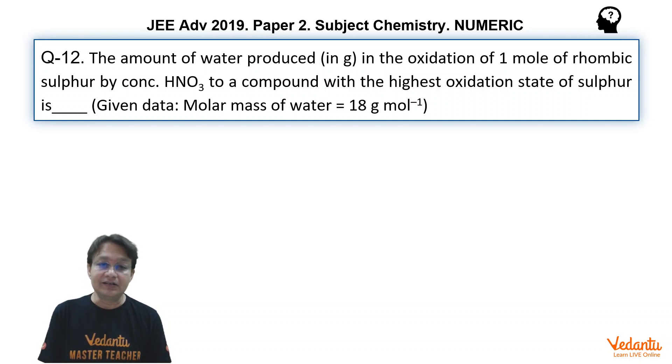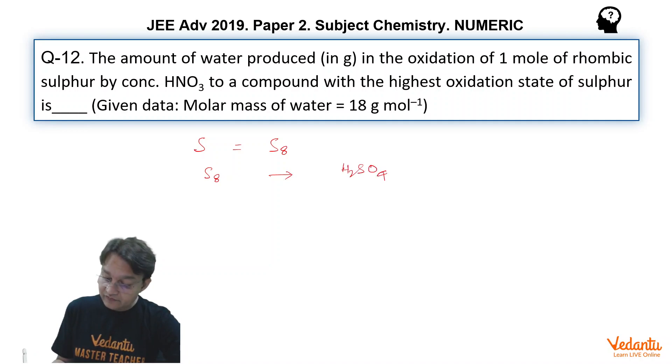That is a very simple problem but the thing is here we need to know few things to solve this problem and that is the source of difficulty. Very first thing you must know that sulphur is basically S8. Secondly, the examiner has made it clear that S8 is going to change into H2SO4. Here sulphur is in highest oxidation state of plus 6.